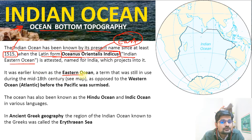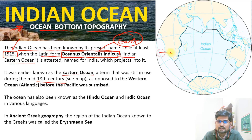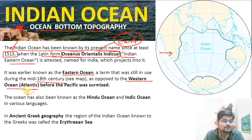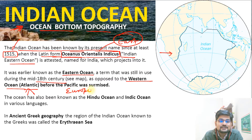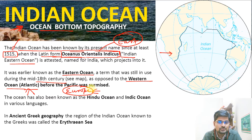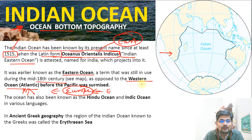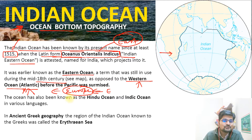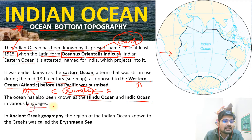It was earlier known as the Eastern Ocean, a term still in use during the 18th century, as opposed to the Western Ocean which referred to the Atlantic. This naming was from the European perspective — from Europe, the west is the Atlantic and the east is the Indian Ocean. The ocean has also been known as the Hindu Ocean and Indic Ocean in various texts and languages.